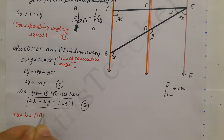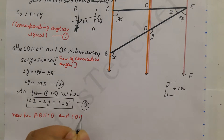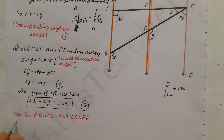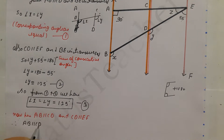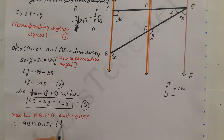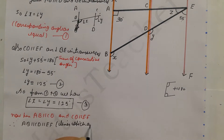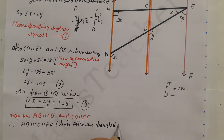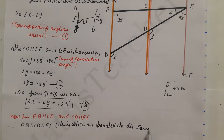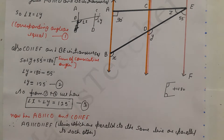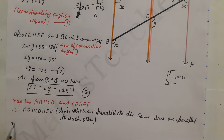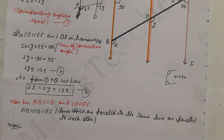We are given AB parallel to CD, and CD parallel to EF. Therefore AB parallel CD parallel EF, which means AB is parallel to EF. The reason is: lines which are parallel to the same line are parallel to each other. That's why AB is parallel to EF. Now I just want this line to be parallel, so I will write AB is parallel to EF.